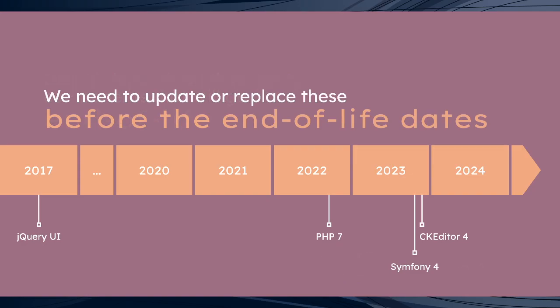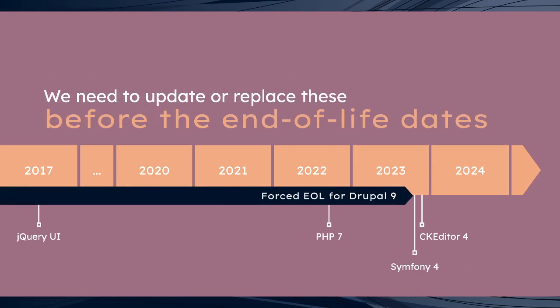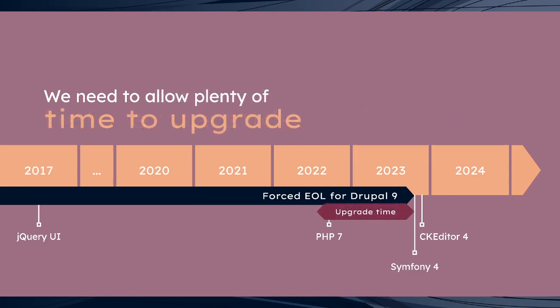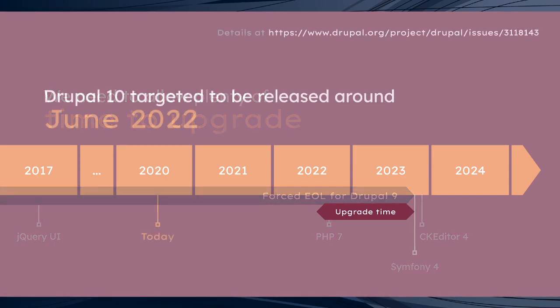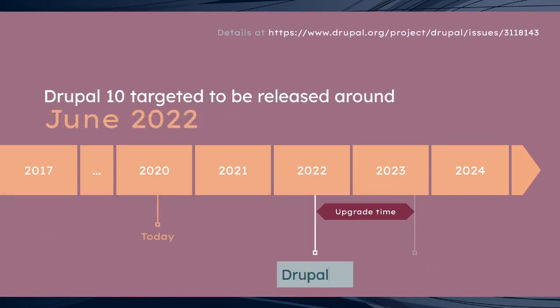What that does is it forces us to end of life Drupal 9 as well. So what we need to do is release a new version of Drupal well before these are end of life, because we want to give all of the users of Drupal 9 time to upgrade their site before these components are end of life. That means we're targeting the release of Drupal 10 to be around June of 2022.